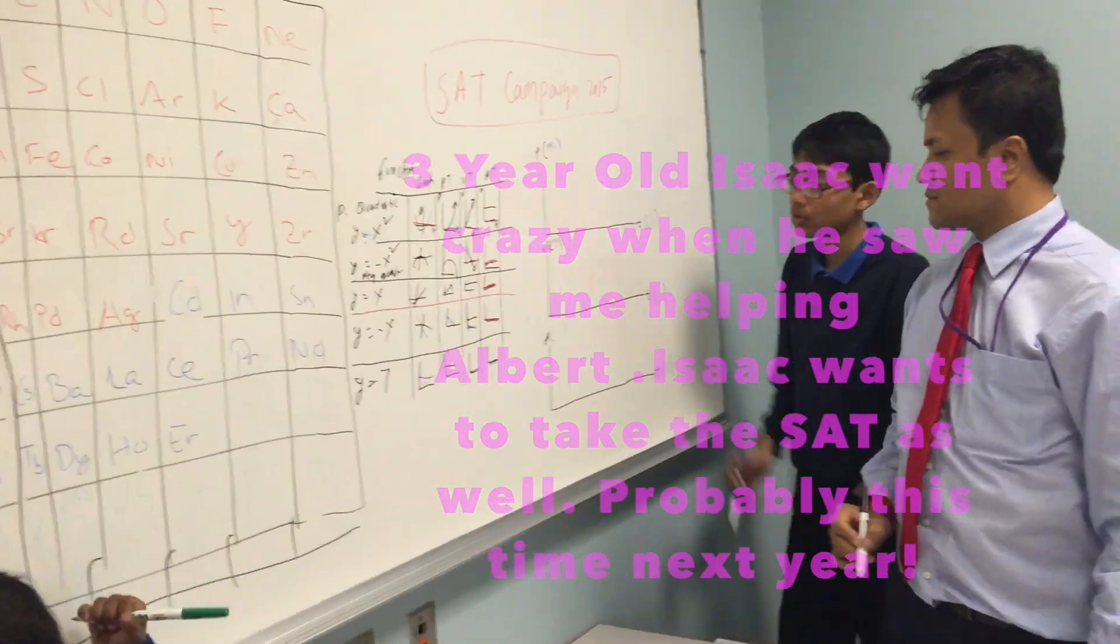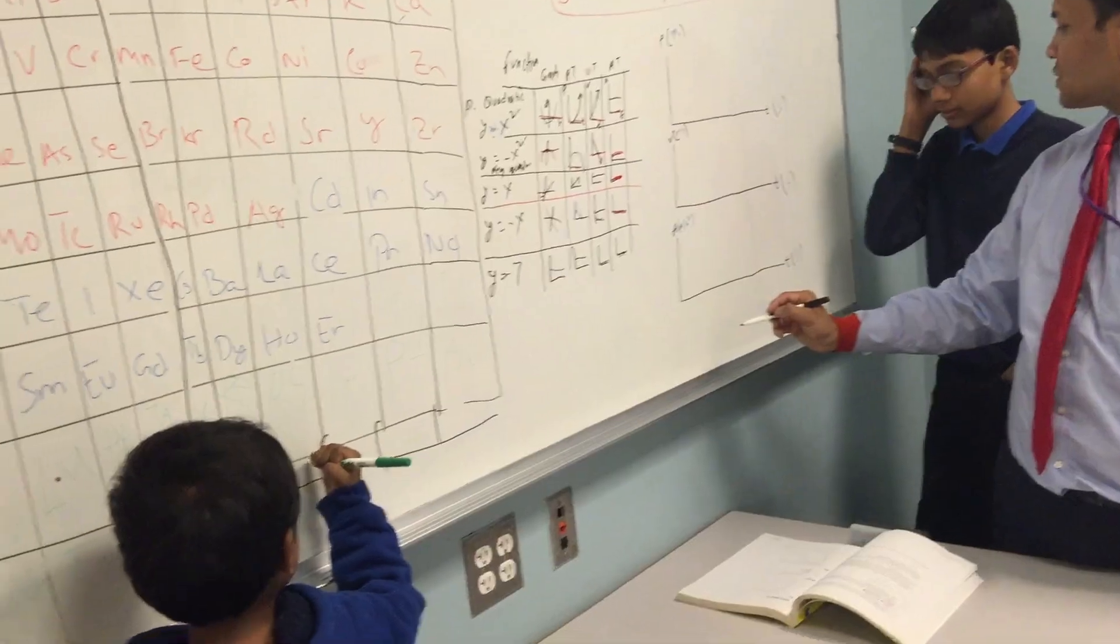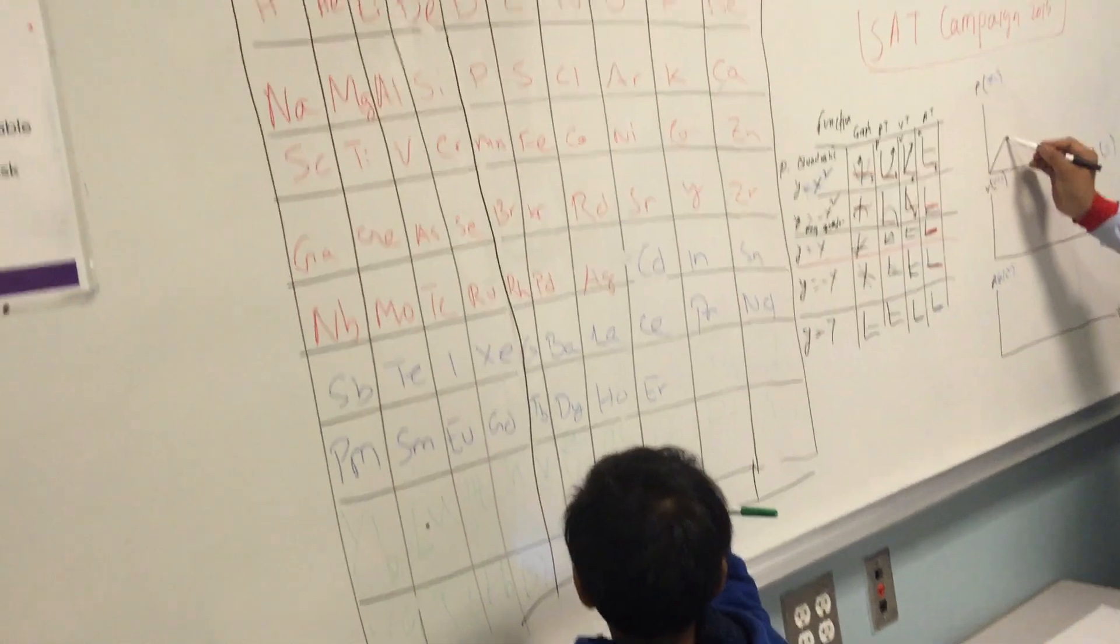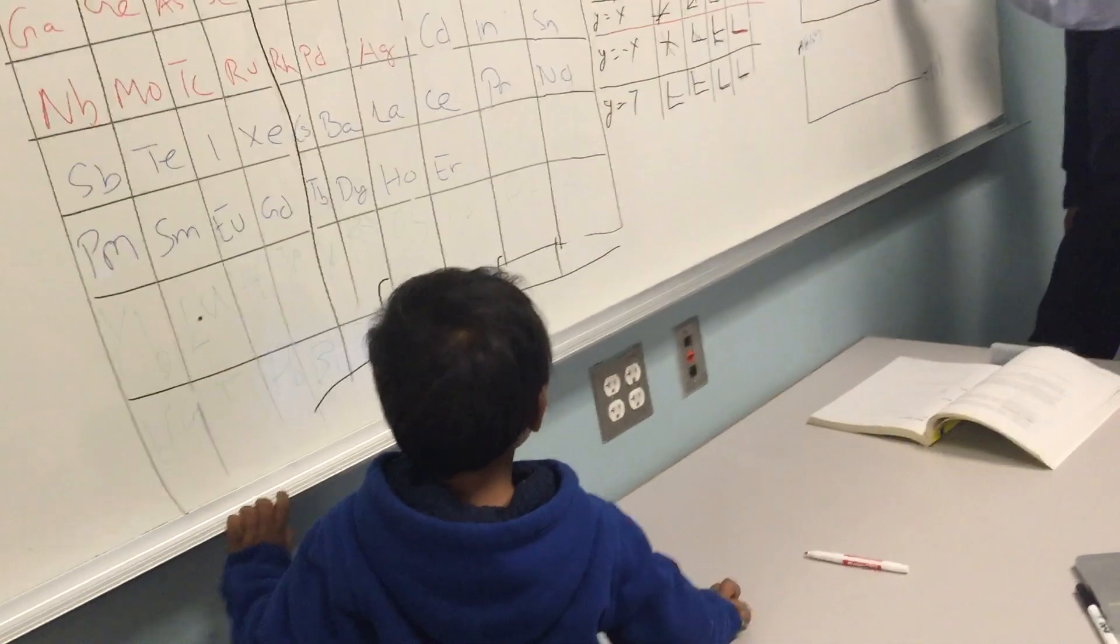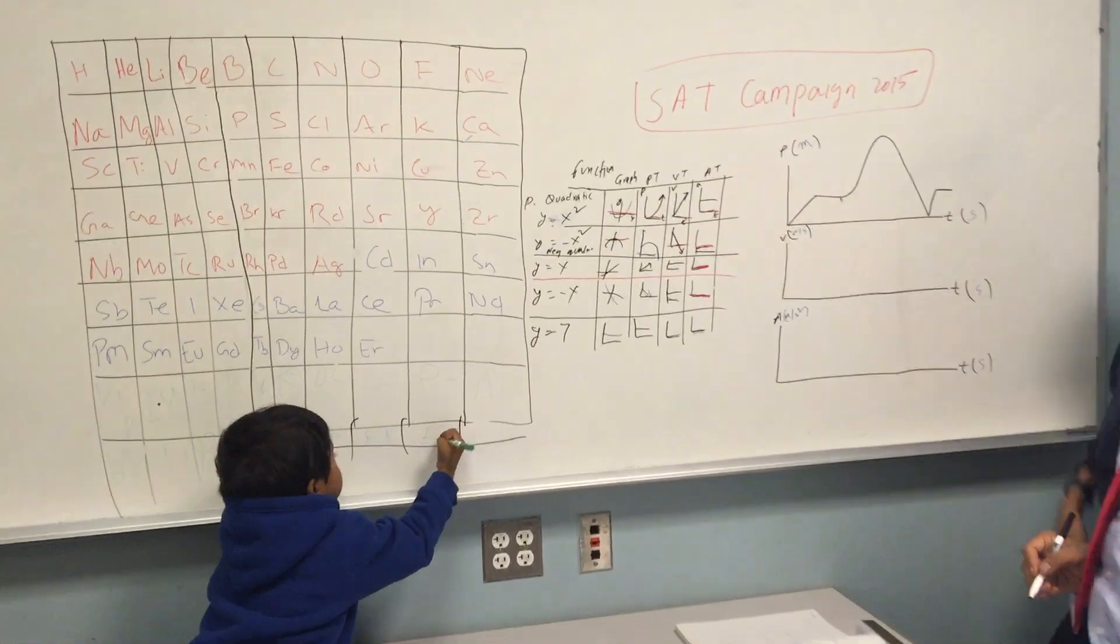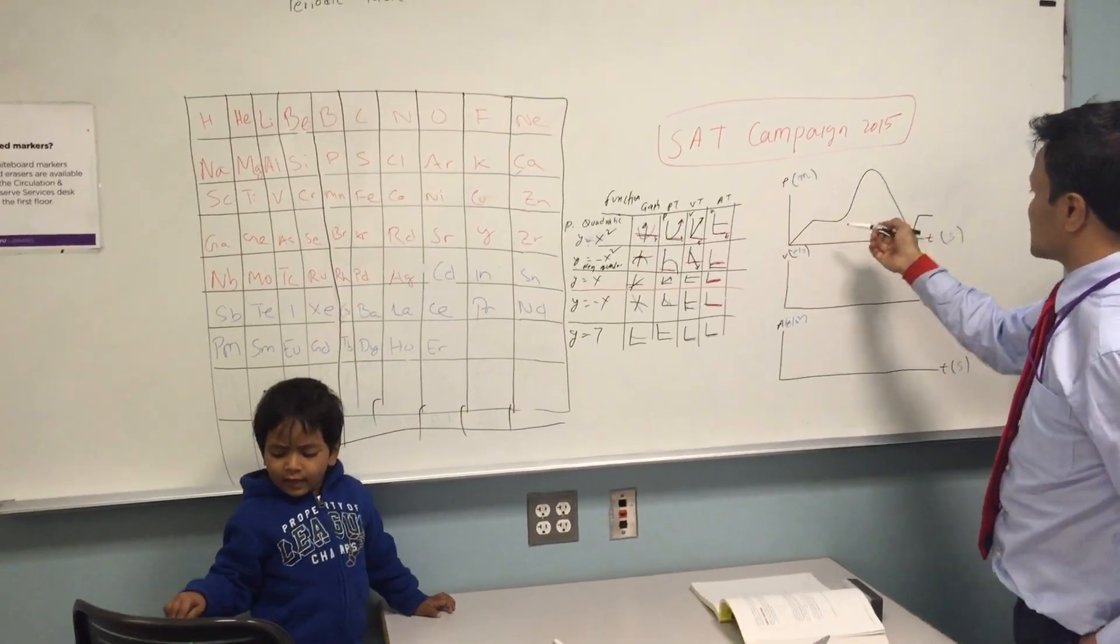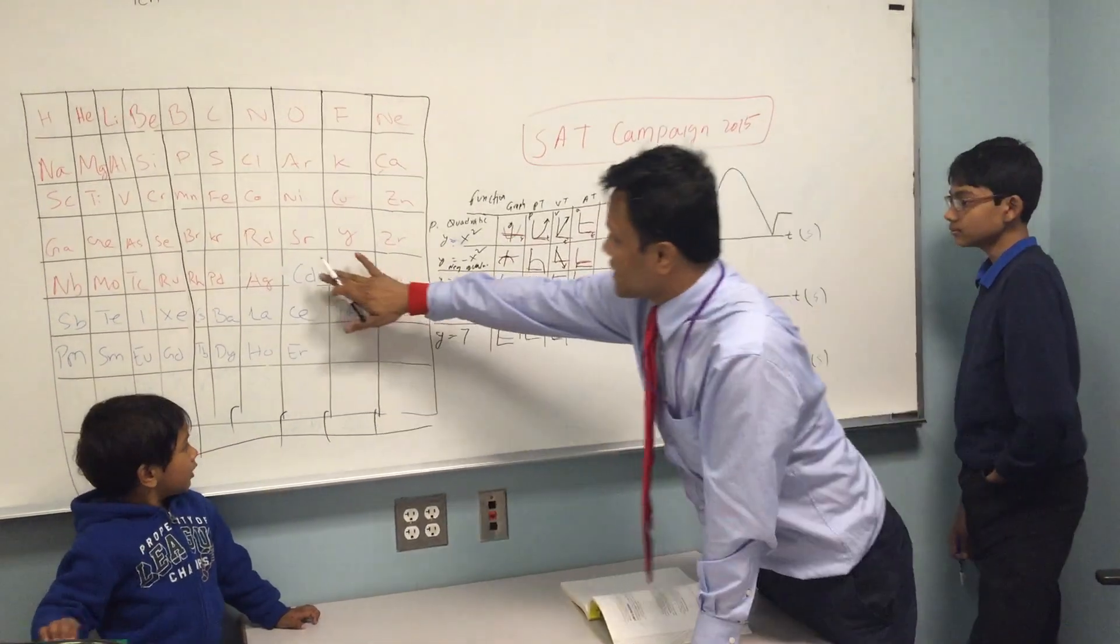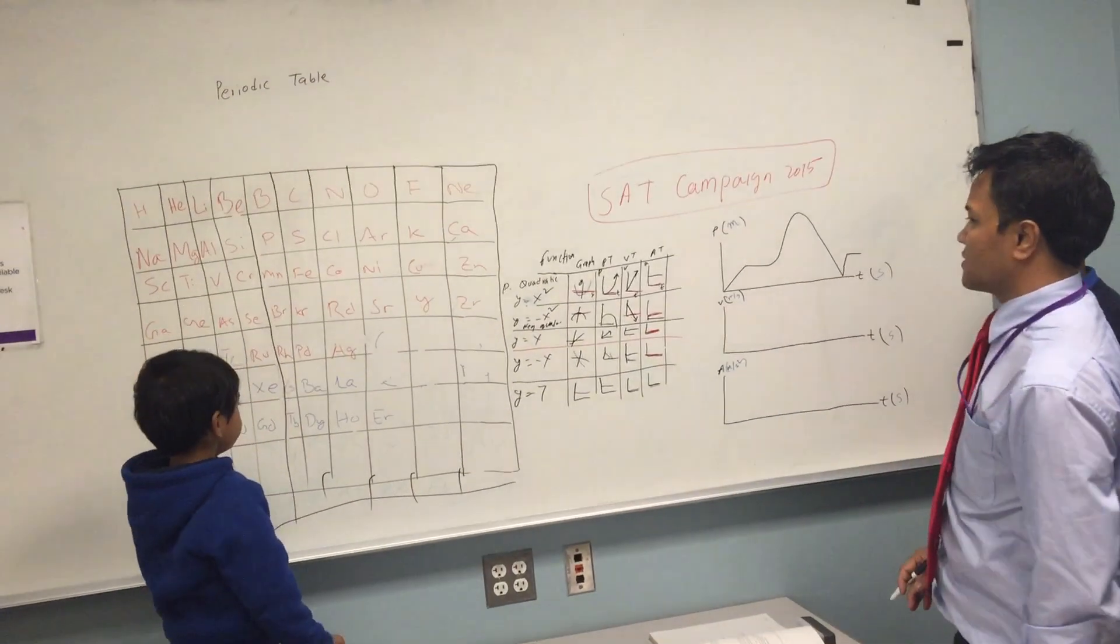Meter per second is good. So okay, now if we have a position versus time graph like that, okay? Very interesting. It can be time, okay, it can be good. Now what is this?